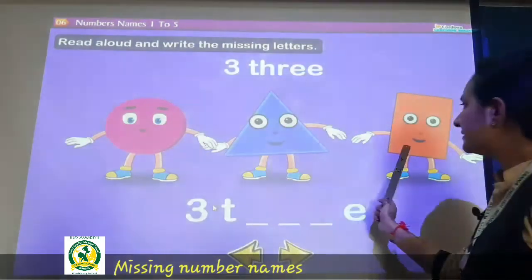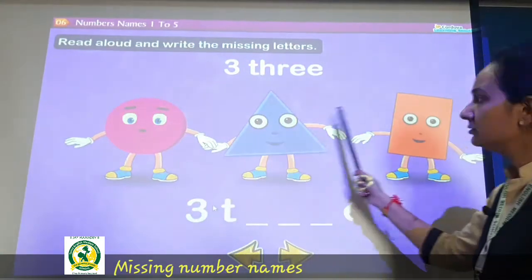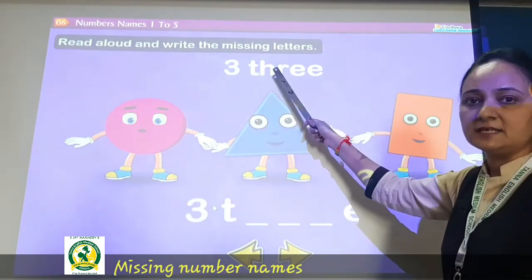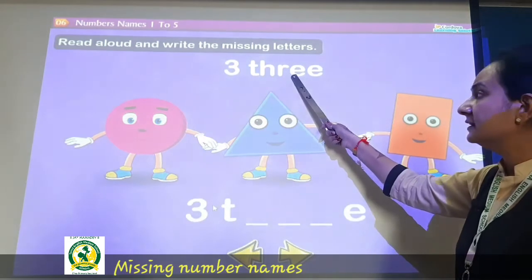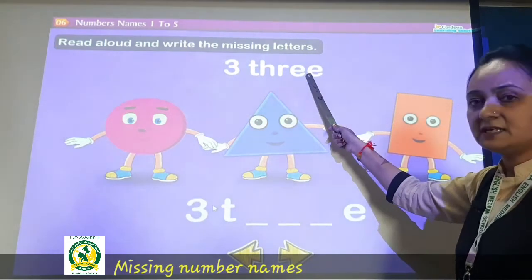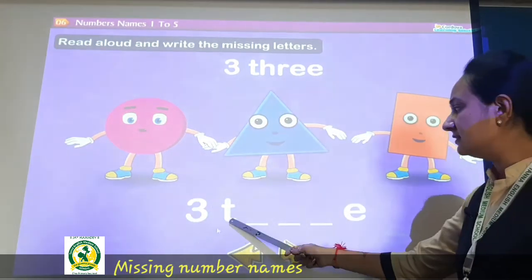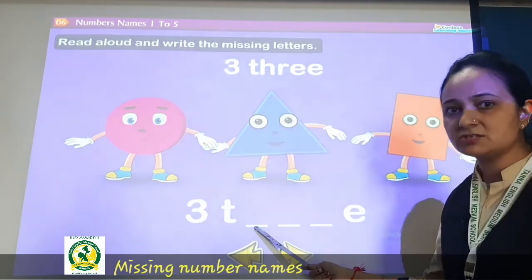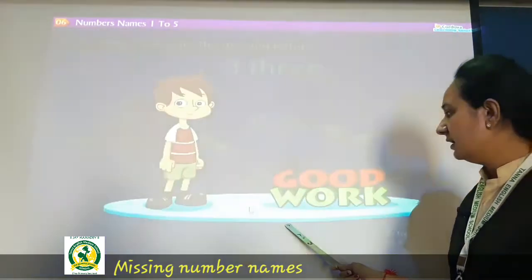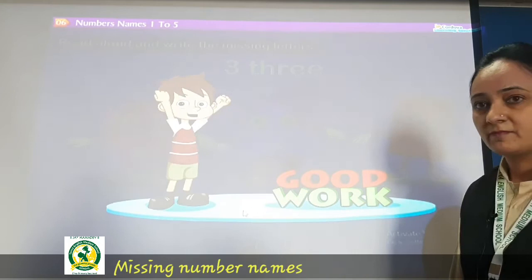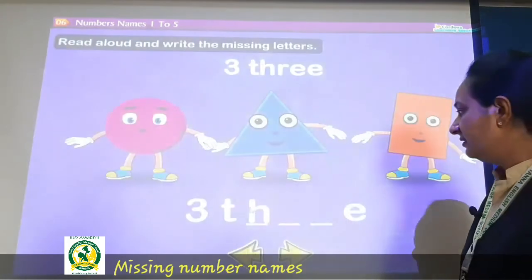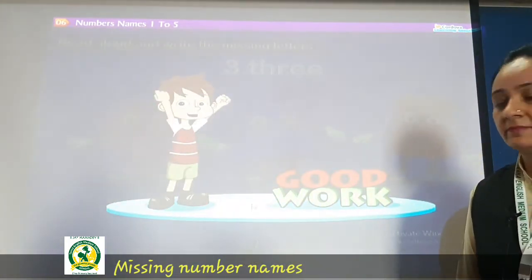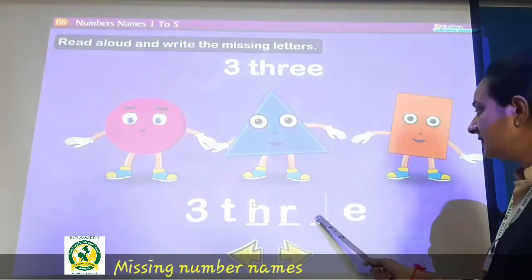Now see, how many shapes are there? 1, 2, 3 — so what is the spelling? T, H, R, double E — THREE. So write here: E is given, then write H, R, E, E.